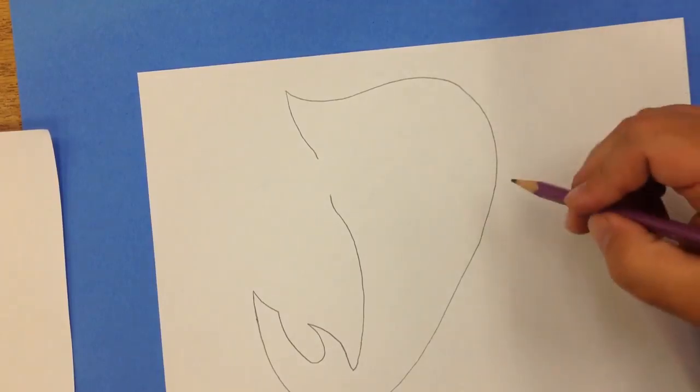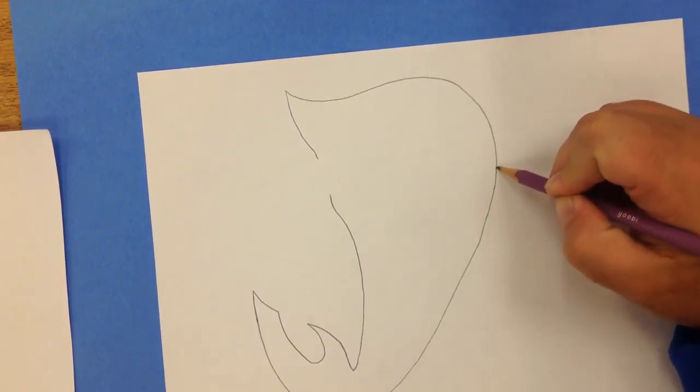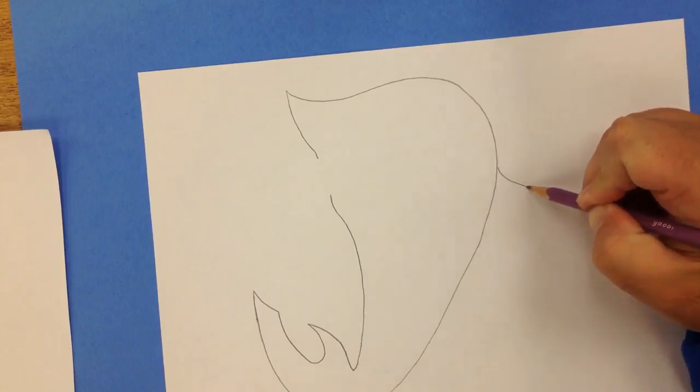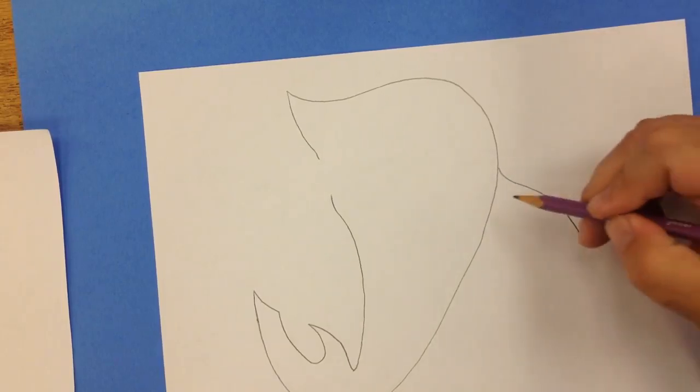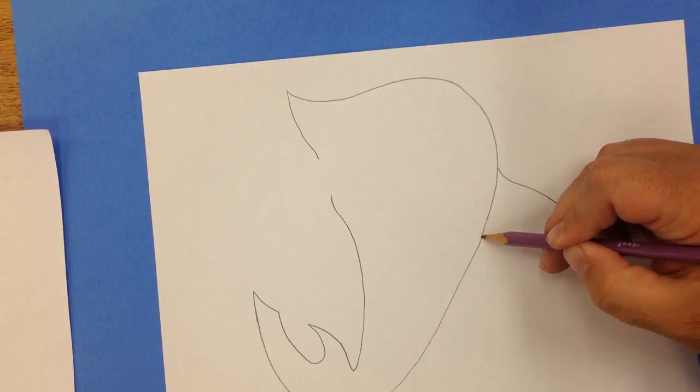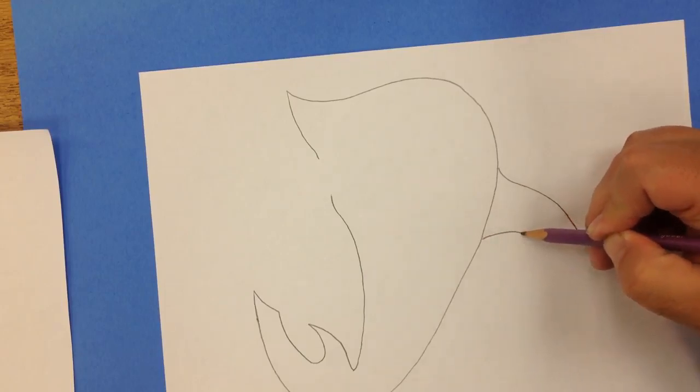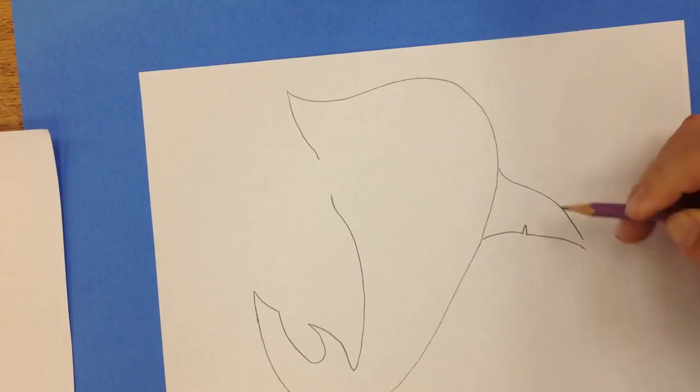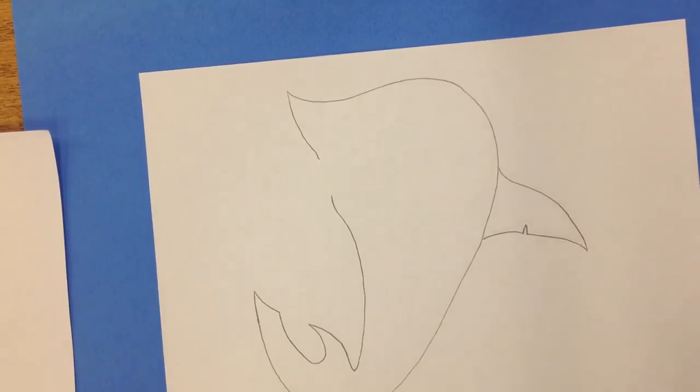After that, I'm going to make the back or dorsal fin right about here. I'm just going to kind of put a little notch in it to add some character. Bring it to a point like that.